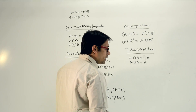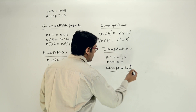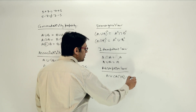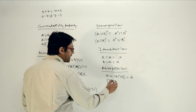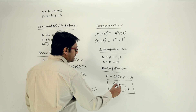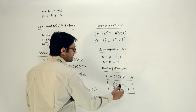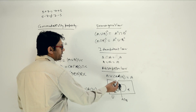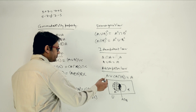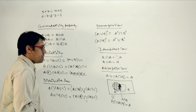The next is the absorption law. If we do A union (A intersection B), then it can be written as A itself. In a Venn diagram, this is the universal set, A is one set, and B is another. A intersection B is the overlapping region, which is already within A. So A union (A intersection B) is just A. Similarly, A intersection (A union B) is also equivalent to A. This is the absorption law.